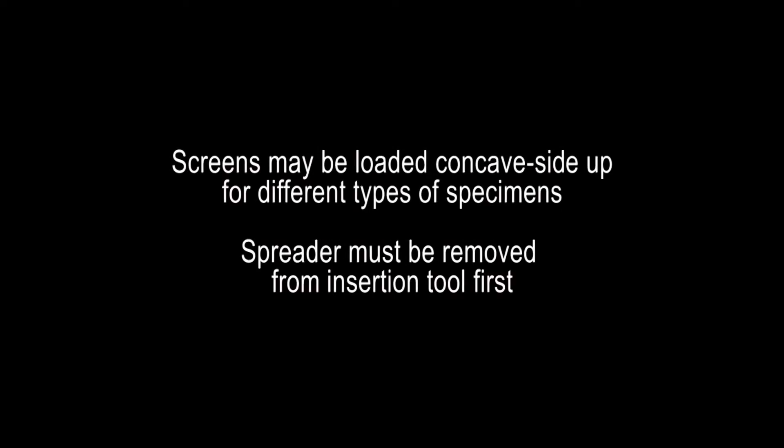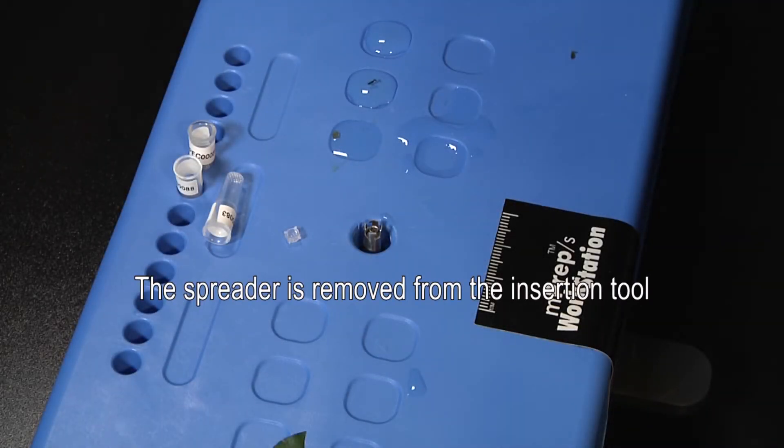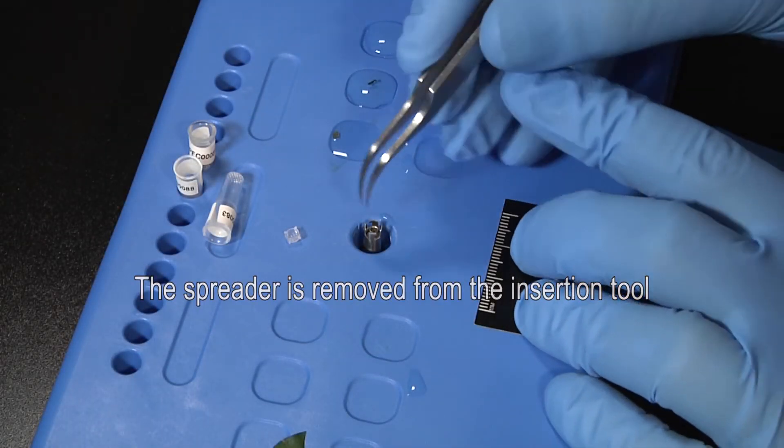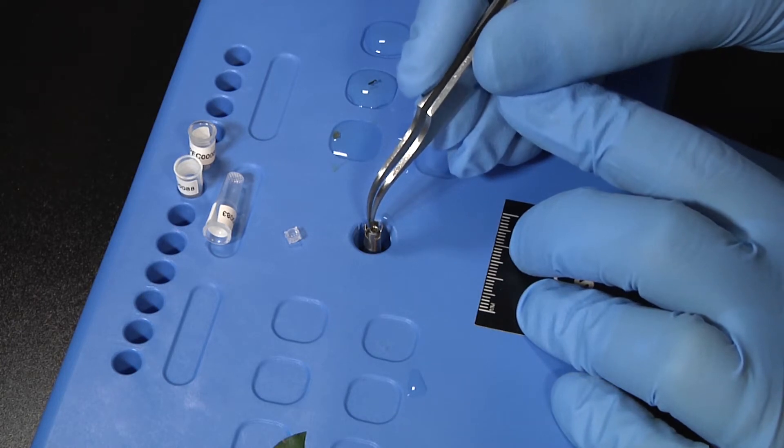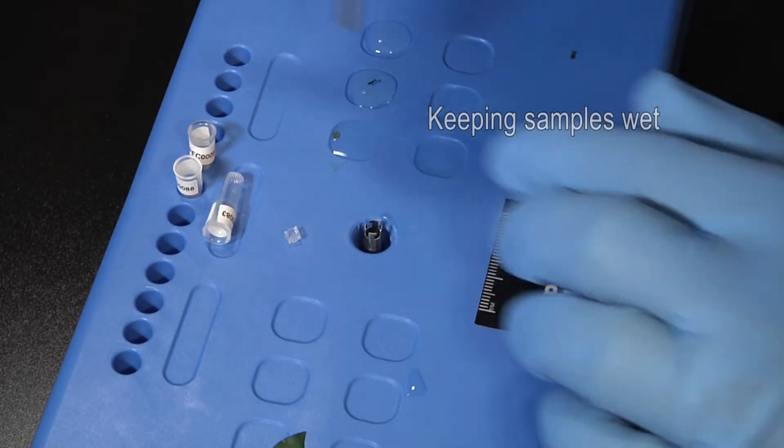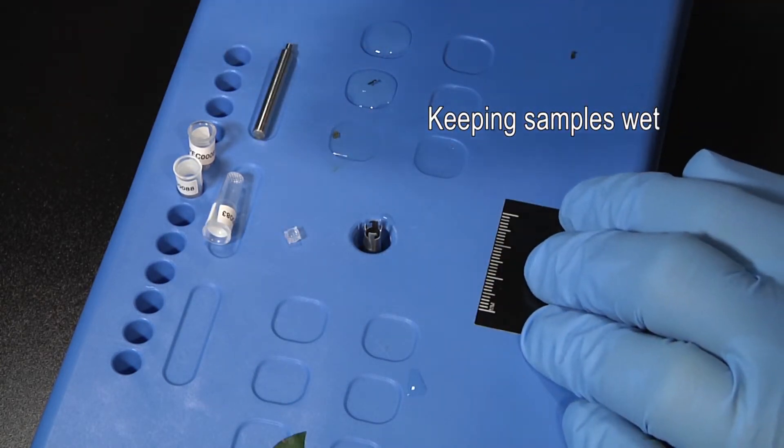A third way to load specimens is to use the concave side of the screen. To do so, the spreader rod must first be removed. This is done by simply lifting it out and setting it aside. This example also shows that samples can be easily kept wet with buffer or fixative during processing.